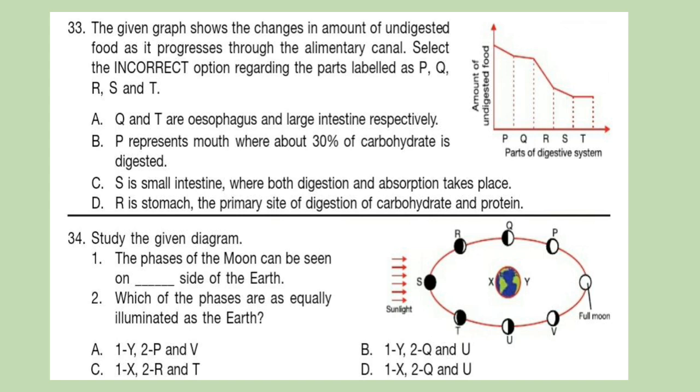Question 34: Study the given diagram. One: The phases of the moon can be seen on blank side of the Earth. Two: Which of the phases are as equally illuminated as the Earth?